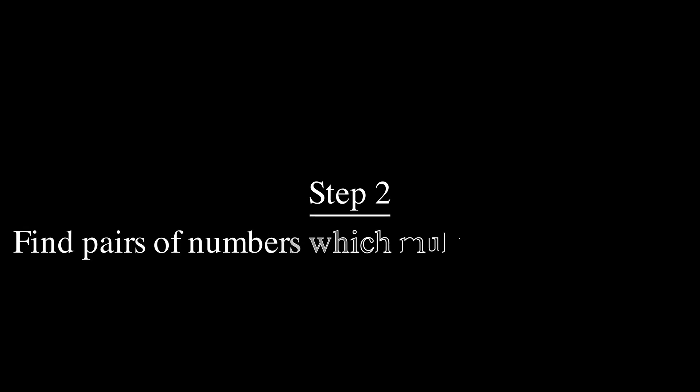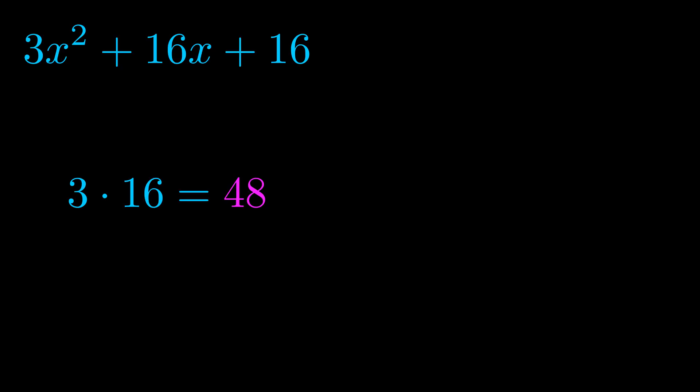Step two is to try to find all of the pairs which multiply to this number. Now it turns out you don't really need to find all of them but go ahead and write down as many numbers as you can that multiply to the magenta value for now.